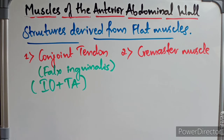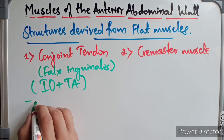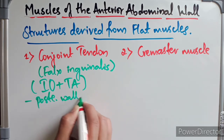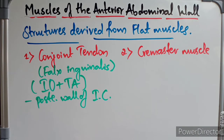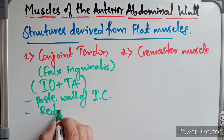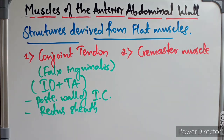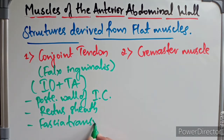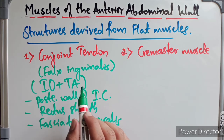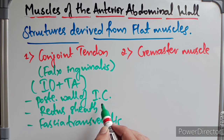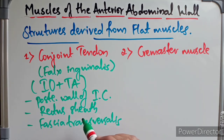The important features of the conjoint tendon are: it forms the medial half of the posterior wall of the inguinal canal; medially it blends with the anterior wall of the rectus sheath; and laterally it may occasionally extend up to the interfoveolar ligament, forming a thickening of the fascia transversalis.